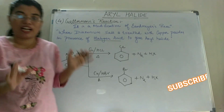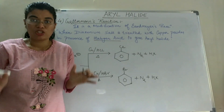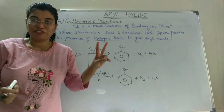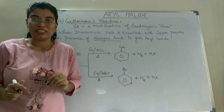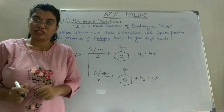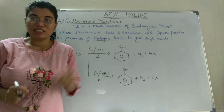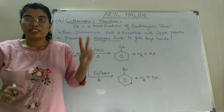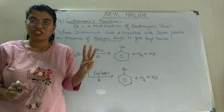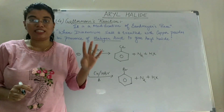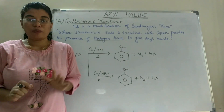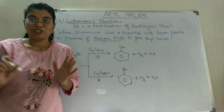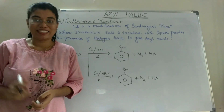So we have studied all the different methods of preparation of Aryl Halide. In total there are two methods: first is direct halogenation, and second is by diazonium salt. Under diazonium salt there are four methods: first is Sandmeyer's reaction, second is Balz-Schiemann reaction, third is reaction with KI, and fourth is Gatterman's reaction. I hope you have understood. See you in the next video — bye and take care.